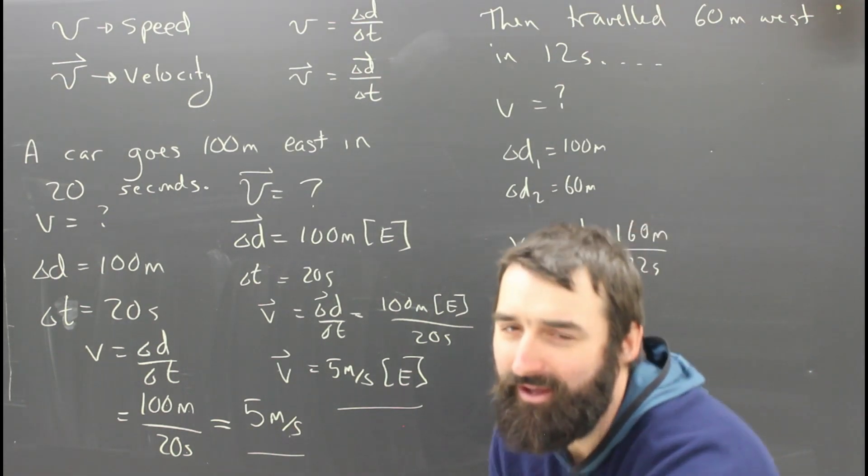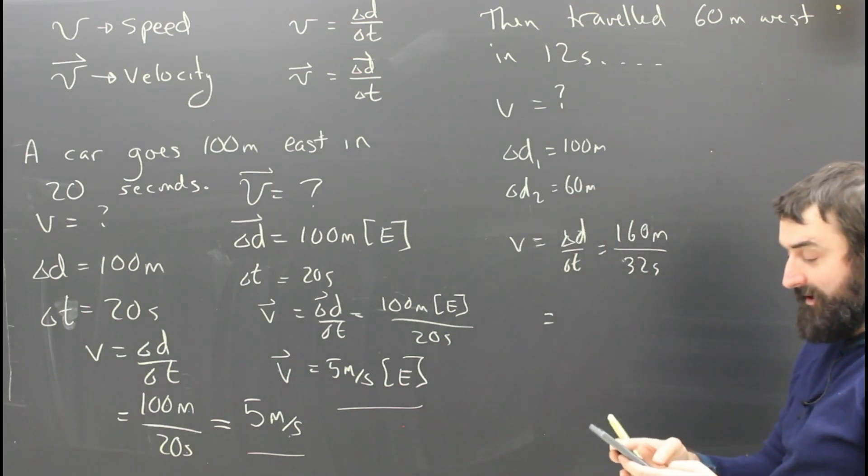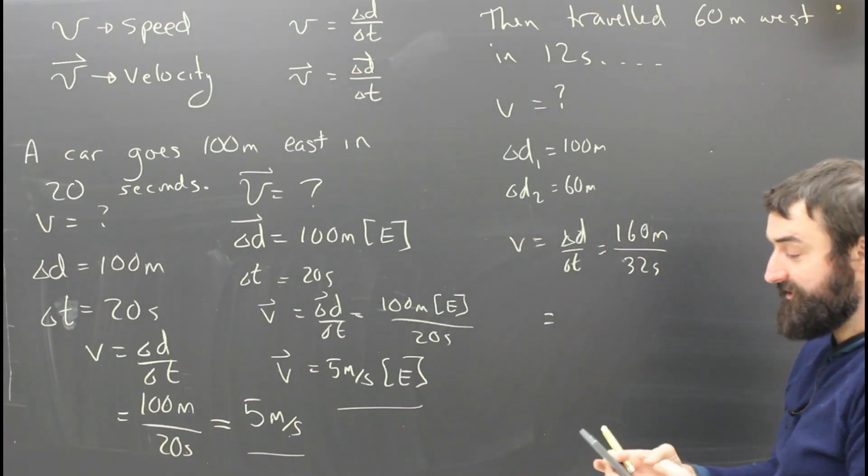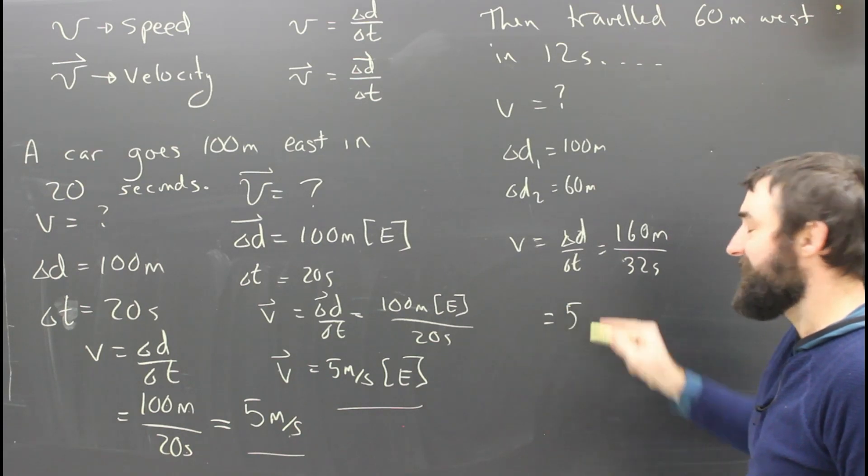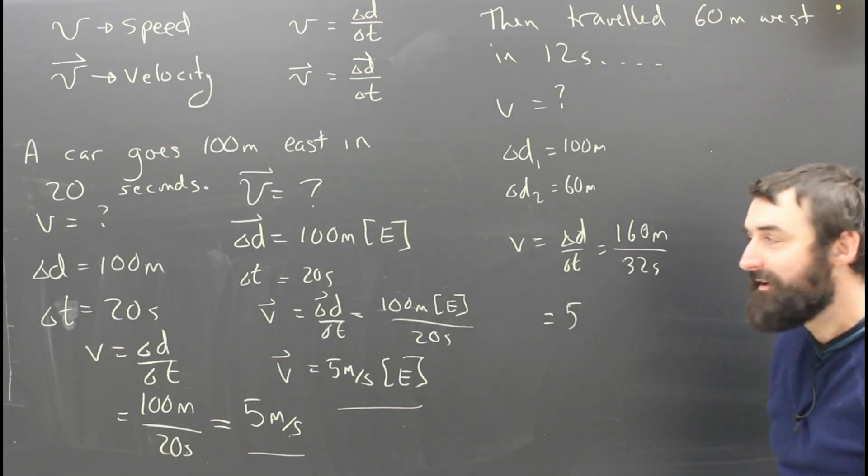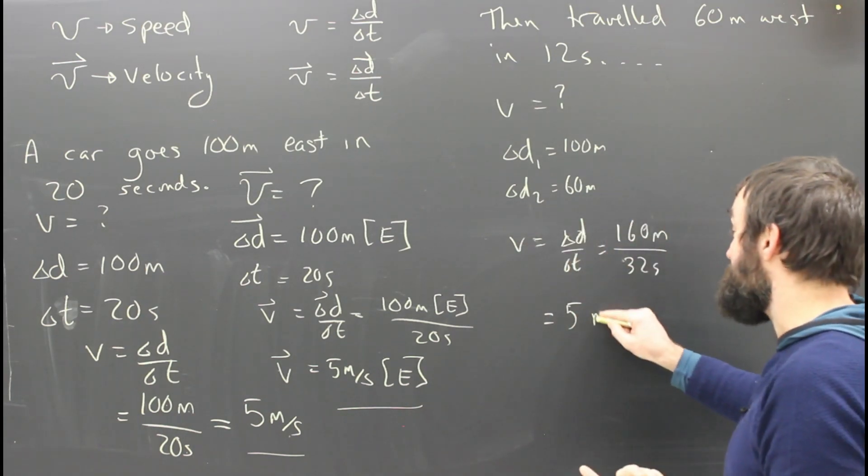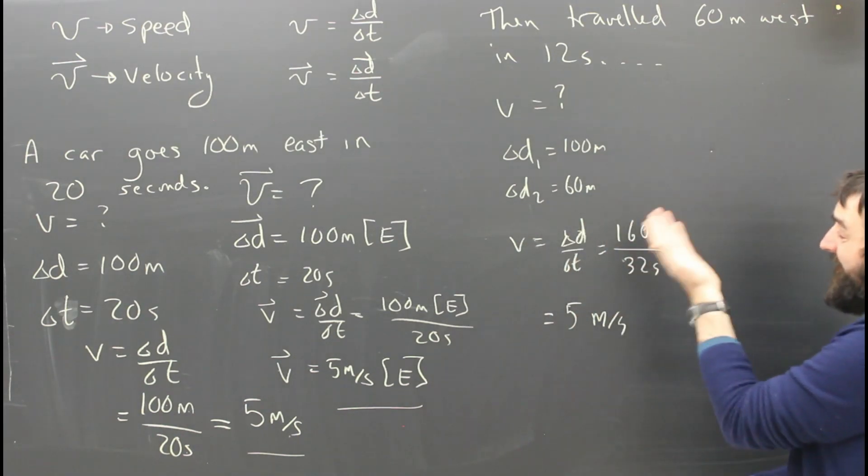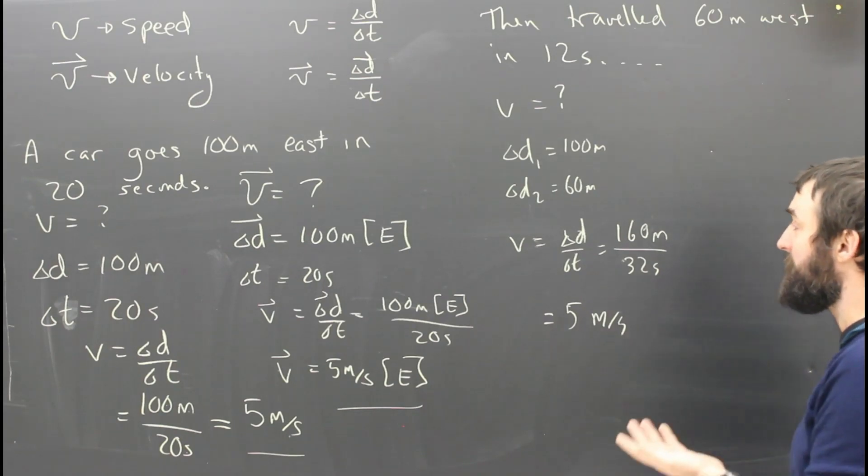So now, its speed is going to be whatever 160 divided by 32 is. I should have thought this one through. It's okay. I have my calculator. 160 divided by 32. He picked the numbers. He knew the answer was 5. This car went at the same speed. The speed is still 5. It went another 60 meters in 12 seconds. No problem.